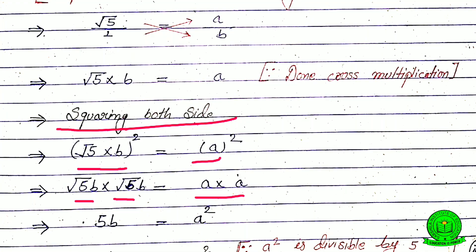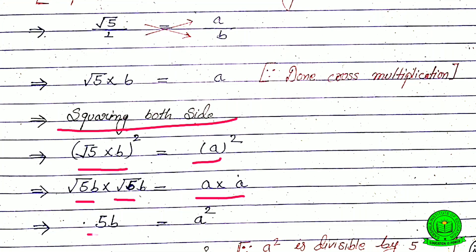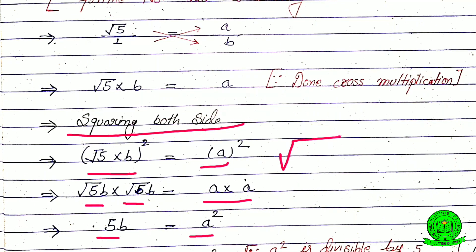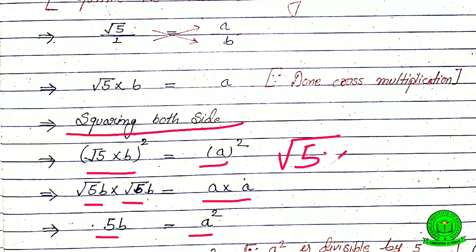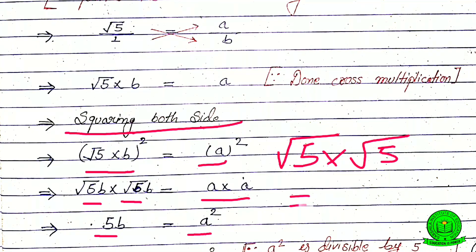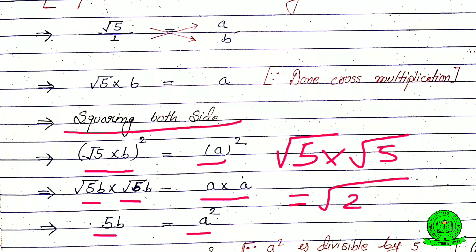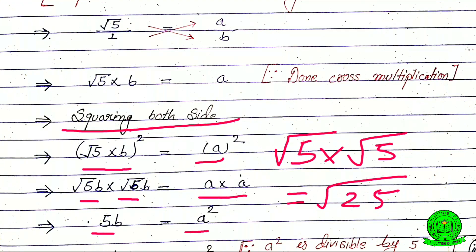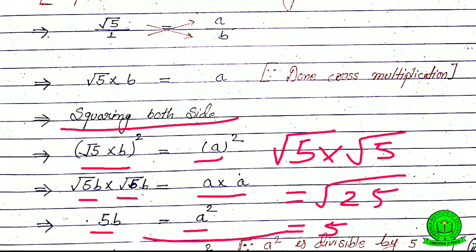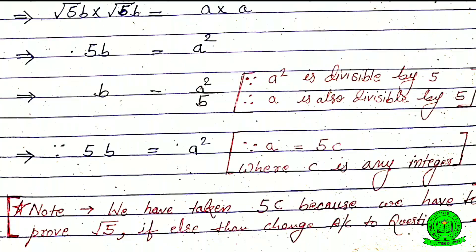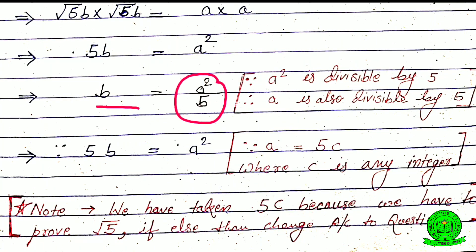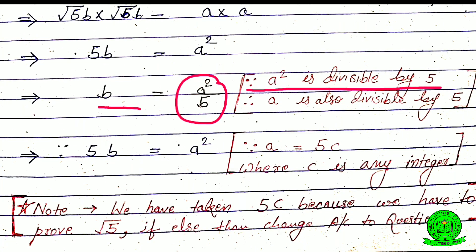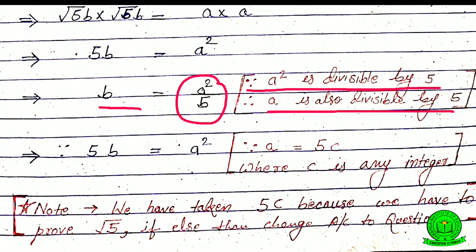Solving that, root 5 times root 5 equals 5, so we get 5b squared equals a squared. Therefore b squared equals a squared by 5, meaning a squared is divisible by 5, and so we can say that a is also divisible by 5.